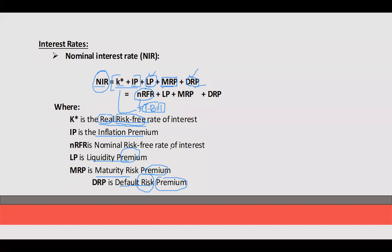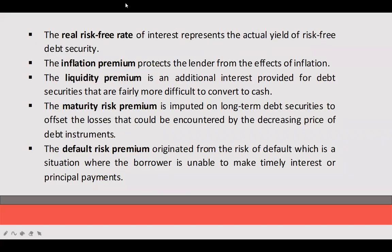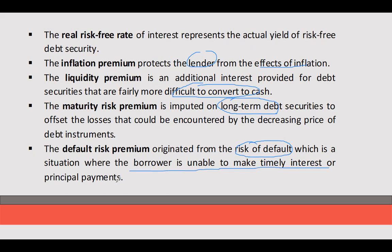For long-term securities, the maturity risk premium is present. These are the components of nominal interest rate, though not all debt securities have all components. The real risk-free rate represents the actual yield of a risk-free debt security. Inflation premium protects the lender from the effect of inflation. Liquidity premium is additional interest for debt securities that are more difficult to convert to cash. Maturity risk premium is imputed in long-term debt, and default risk premium covers the risk of the borrower being unable to make timely interest or principal payments.